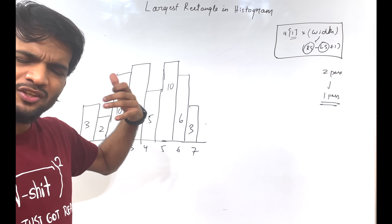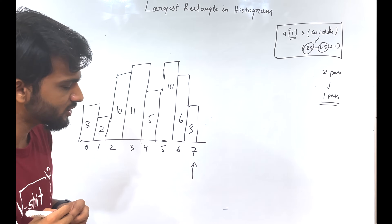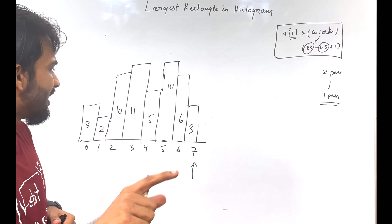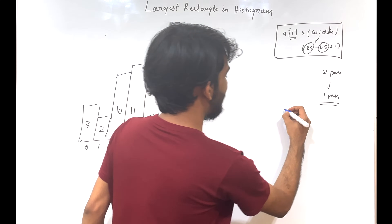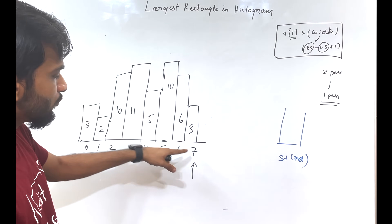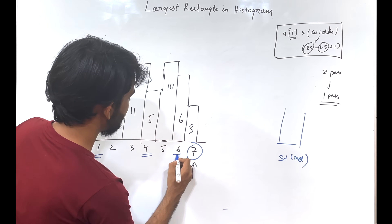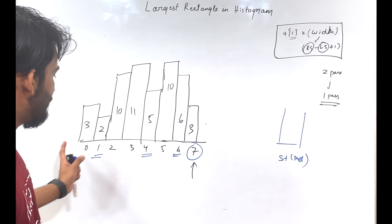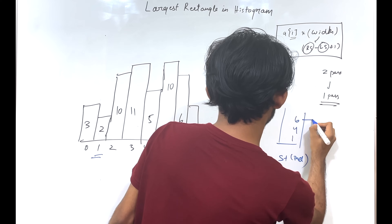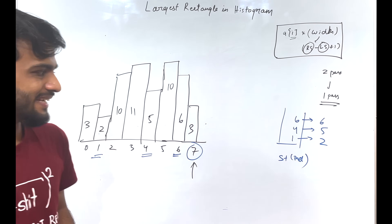If you remember the previous process of finding the left smaller, the moment you come to index 7, the stack will contain everything in a linearly increasing fashion. It will have index 1 (value 2), index 4 (value 5), and index 6 (value 6). You can do a dry run and verify that the stack contains index 1, index 4, and index 6 when you reach a[7] = 3.